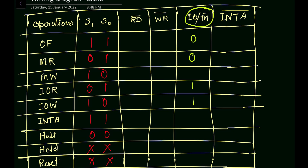For the IO/M bar signal: opcode fetch is a memory read so IO/M bar is zero. Memory read and memory write also give IO/M bar equal to zero. For input/output read and write, IO/M bar will be high (one). For interrupt acknowledgement, IO/M bar is also high (one). INTA bar, being an active low signal, will go low only for the interrupt acknowledgement case.